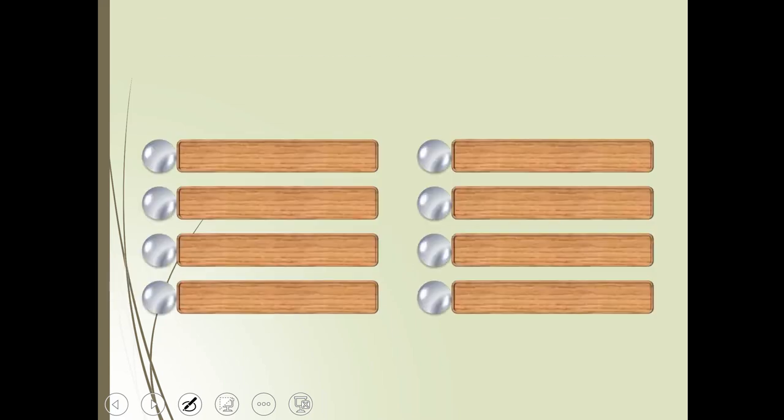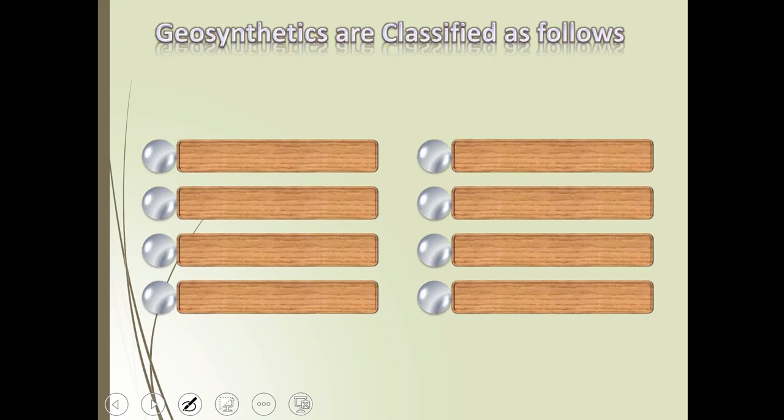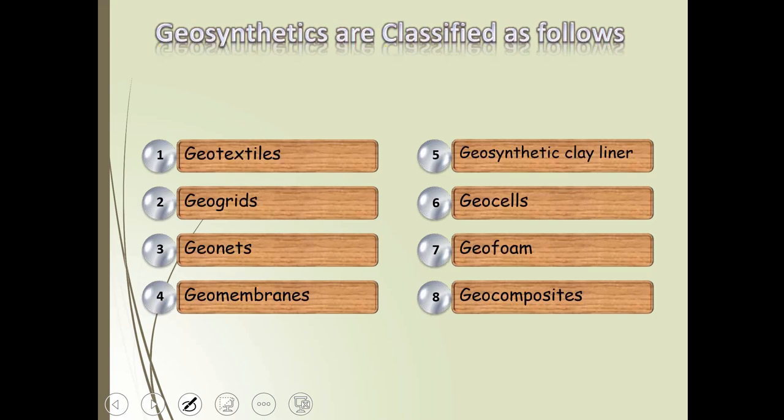Hello class, today we will discuss about geosynthetics. First of all, we have to understand what is geo and what is synthetics. Geo means improvement of the properties, and synthetics means man-made or artificial. Today we will discuss the types of geosynthetics and their applications in detail: geotextiles, geogrids, geonets, geomembranes, geosynthetic clay liner, geoshells, geofoam, and geocomposites.